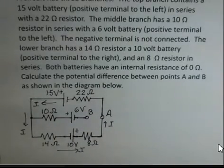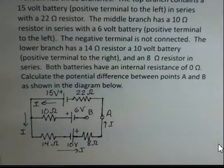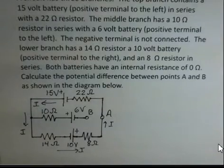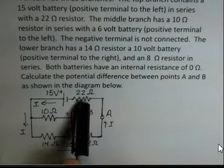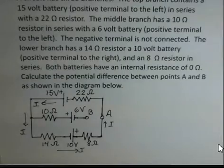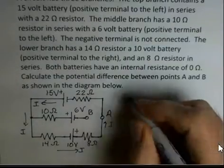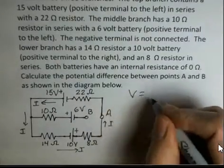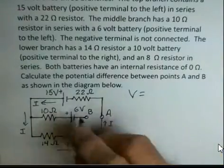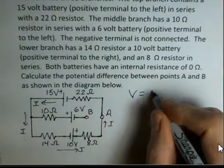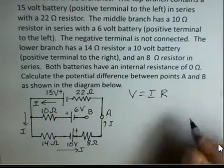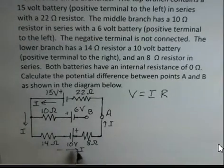In setting this up, I'd like to know the value of that current I, which will be useful for calculating the potential difference across the 22-ohm resistor. We need the relationship between potential difference around the whole circuit, the current, and the resistance around this loop.